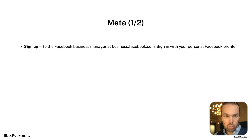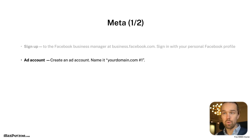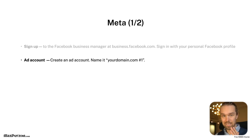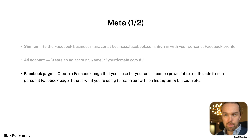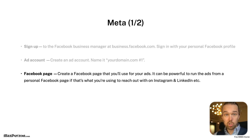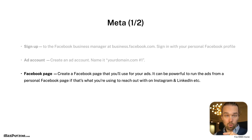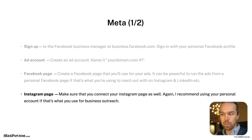Let's start with Meta — Facebook and Instagram. The first thing you should do is sign up to the Facebook Business Manager at business.facebook.com, signing in with your personal Facebook account. Then create an ad account, named after your domain or business. You'll also need to create a Facebook page for your ads — and it can be very powerful to run the ad from a personal page if that's what you're using for outreach on Instagram and LinkedIn. That way people continue to see the same name across all platforms. Make sure you connect your Instagram page as well.